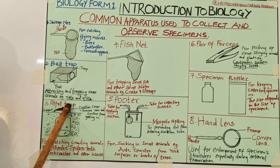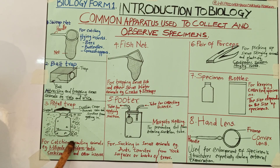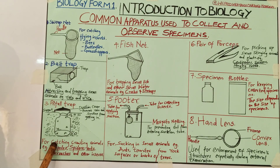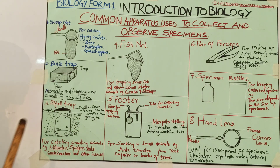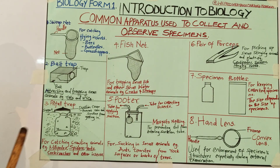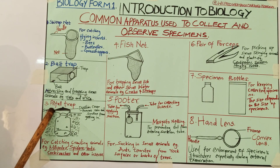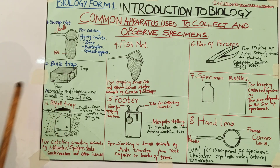The function of the pitfall trap is for catching crawling animals — for example spiders, ants, cockroaches, and other insects. These are specimens that crawl on the ground, so we assume they will crawl and accidentally enter into the pitfall trap.